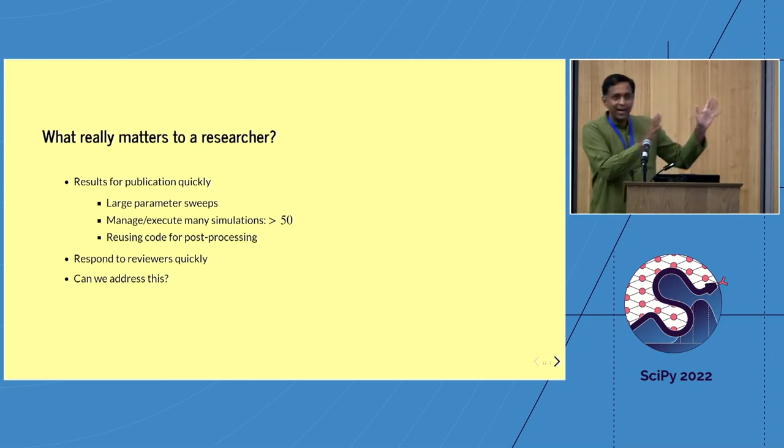So with that sort of sad story, what really does matter to a researcher? Clearly, our messaging saying that reproducibility matters a lot, you got to do it, it's the right thing to do, none of that seems to work. What really does matter is the fact that if I'm a researcher and I'm looking to publish, I need to do large parameter sweeps, I'm going to have to make a bunch of runs. And I'd like to reuse my code for post-processing. I don't want to keep rewriting the same code. And I typically submit a paper and I get a response from reviewers in six months. And the reviewers are going to say, change this, change that, do this, do that. I want to be able to respond to that quickly.